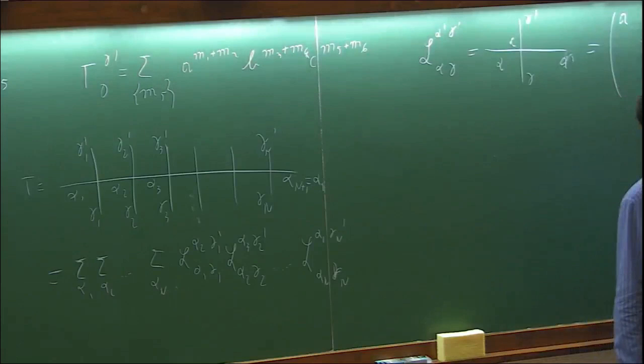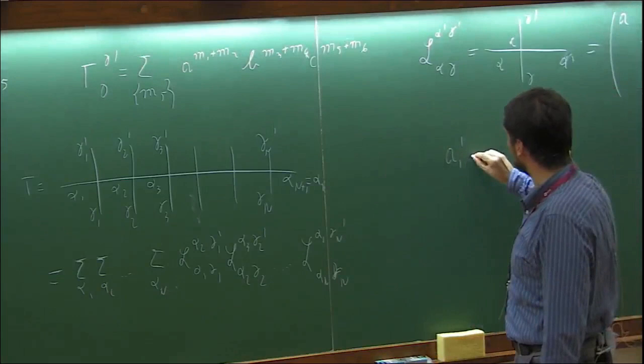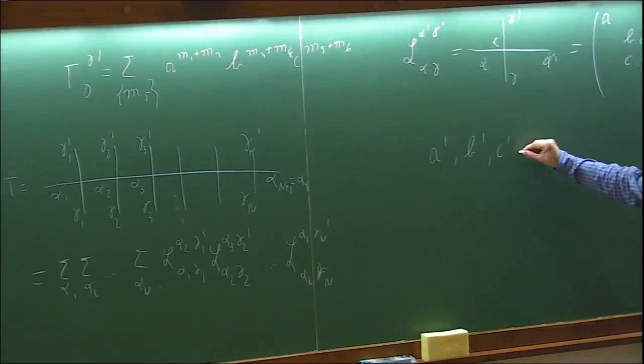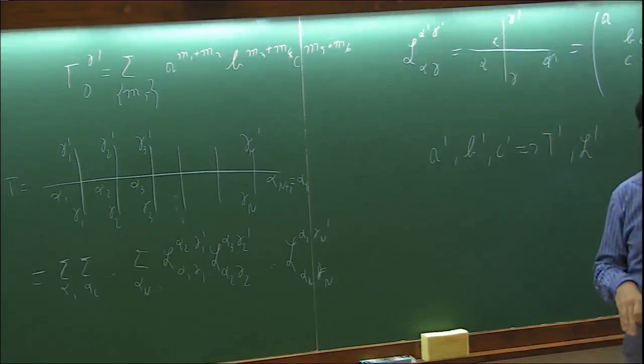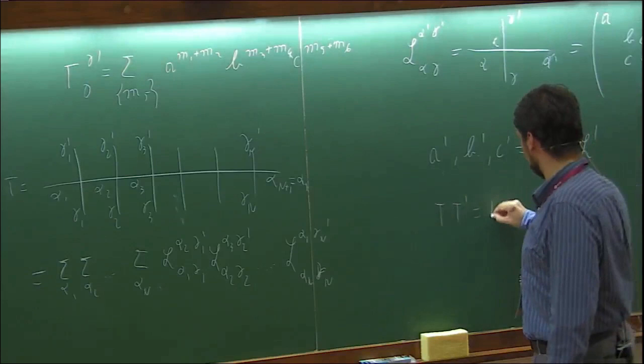Baxter's idea was to introduce a second model, very similar to this one but with different weights a', b', c' — still a six-vertex model but with different weights — and construct a prime transfer matrix T' and prime L operators using these weights. Baxter's question is: under which condition does T T' equal T' T?